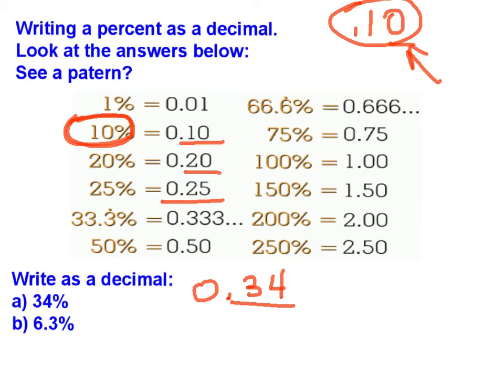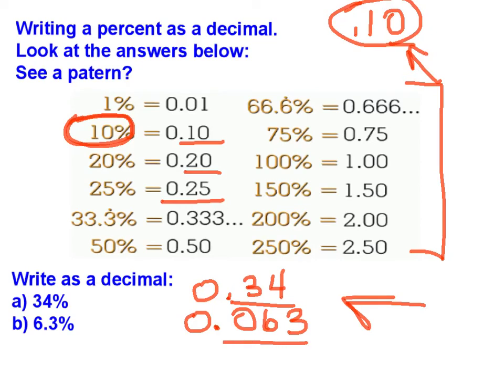Pause the movie now and try B. For B, you should have gotten 0.063. Look at the chart. Look at your two example problems. And see if you see a shortcut or a trick. If you do, write that shortcut or trick on your notes. And we'll discuss it in class the next day.